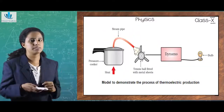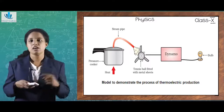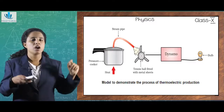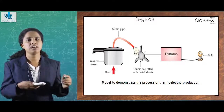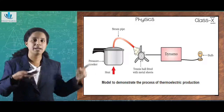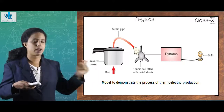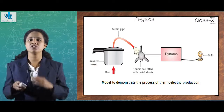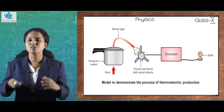This diagram depicts a model to demonstrate the process of thermoelectric production. The first component is a pressure cooker containing water. The second represents the turbines of a dynamo or generator, represented here by a tennis ball fitted with metal sheets as blades. It is further connected to a dynamo which is connected to a bulb. The intention is to light the bulb by converting one form of energy to another.